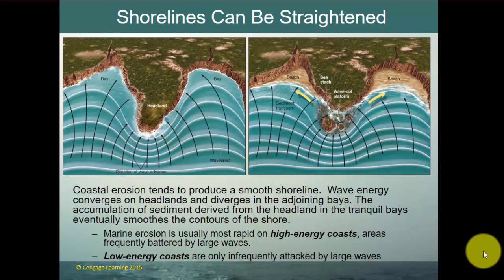Coastal erosion tends to produce a smooth shoreline — shorelines are straightened by coastal erosion. Wave energy converges on headlands, bending waves into them so energy focuses on both sides of the headland and is less in the bays. Accumulation of sediment from the headland in the bays eventually smooths the contour of the shoreline. A headland eventually turns into sea stacks, and as beaches deepen and thicken, the entire coastline straightens out. Marine erosion is usually most rapid on high-energy coasts frequently battered by large waves.